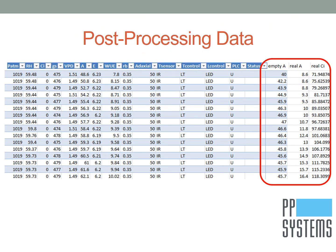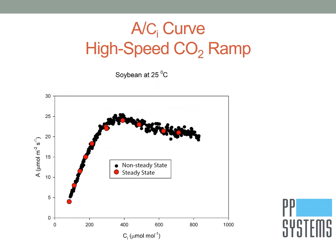When measurements are complete, transfer the stored data from your Cyrus 3 to your PC for post-processing. Post-processing the data can be achieved very easily using Microsoft Excel. Once the data has been imported into Excel, simply subtract the empty cuvette assimilation rates from the actual leaf assimilation rates. Recalculating Ci using the corrected assimilation rates, curves are easily generated. Once post-processing is completed, rapid A/Ci curves can be generated like the one shown here on soybean.